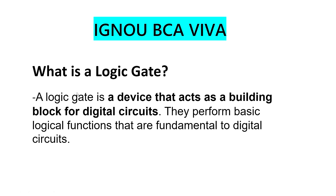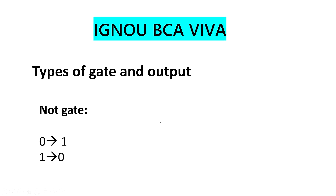A logic gate is a device that acts as building blocks for a digital circuit. Coming to the next question, we have types of gates and their outputs. First of all, NOT gate: if the input is 0, then output is 1; and if input is 1, then output is 0.